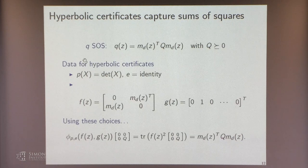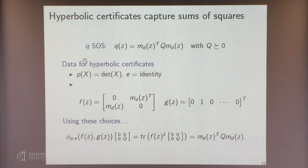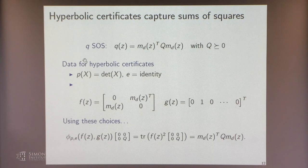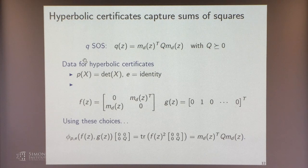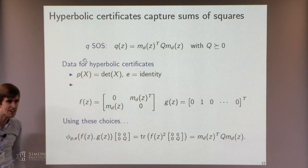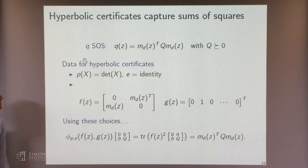Similar structure to before—very much for semi-definite programming and the PSD cone. The first thing you'll notice is that our hyperbolic certificates, if I choose the data carefully, can recapture sums of squares as a special case. The choice is quite natural, with only a tiny slightly unusual element needed.